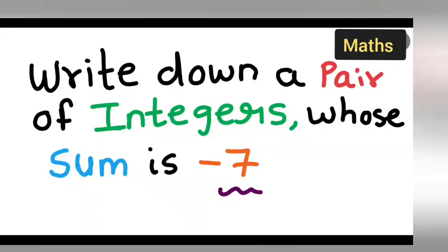Welcome to today's class of mathematics. Today's question is taken from class 7 mathematics from the integer chapter. The question is: write down a pair of integers whose sum is -7.